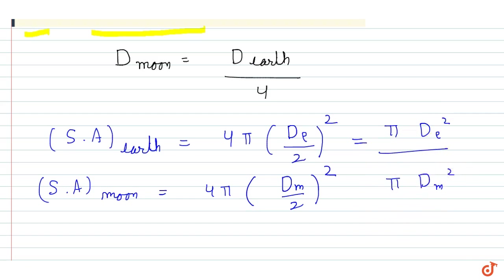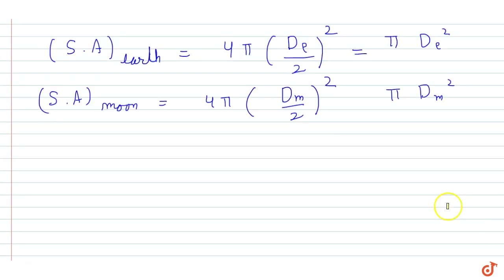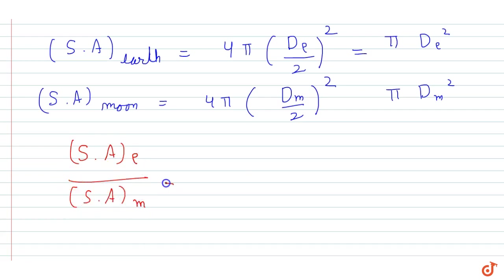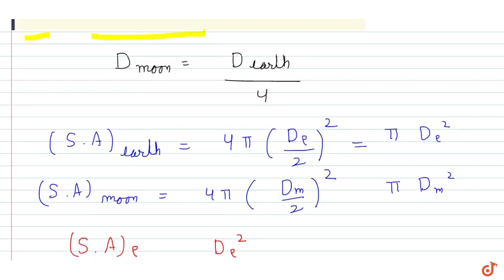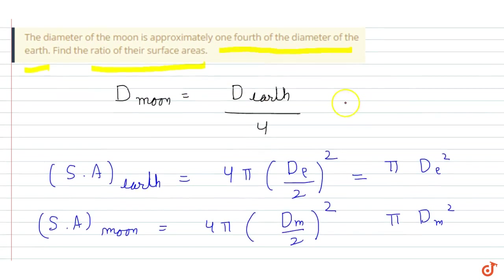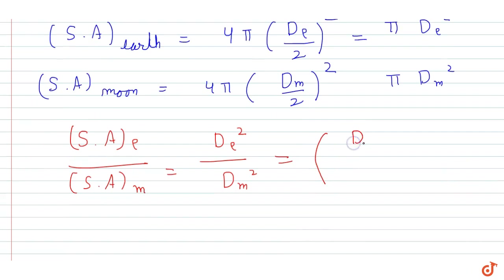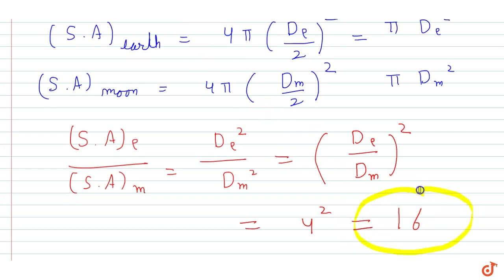Now the question asks us to find the ratio of their surface areas. Surface area of earth upon surface area of moon equals (d_e/d_m)². Since diameter of earth upon diameter of moon equals 4, the ratio becomes 4² which is equal to 16. So the answer for this question is 16.